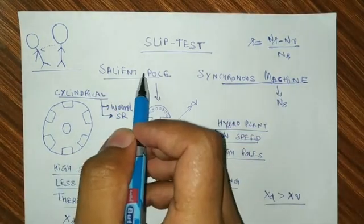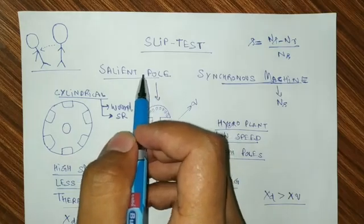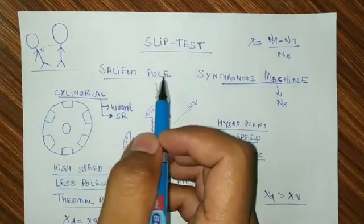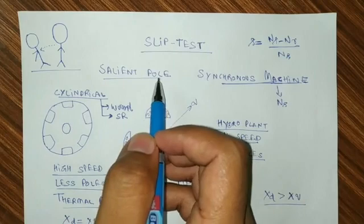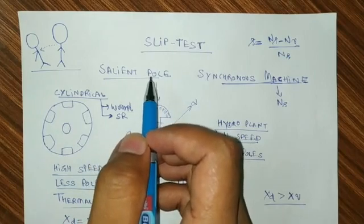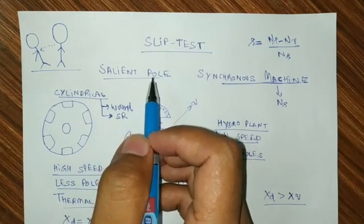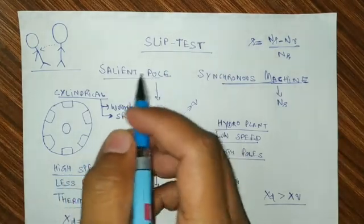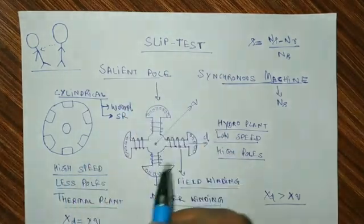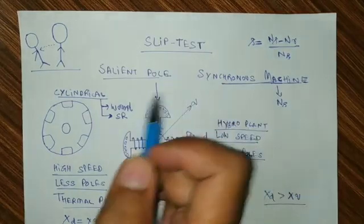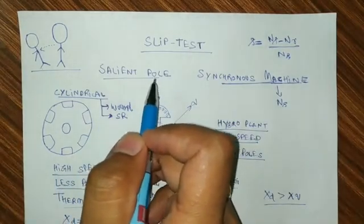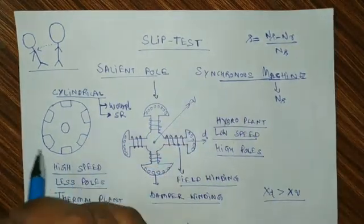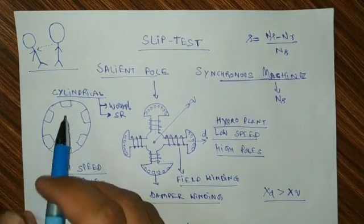So salient pole rotor — what type of rotor is it? It is basically a salient pole rotor. The design of the rotor is salient. Saliency is nothing but like our fan — it is non-uniform. So this type of rotor we are going to use for the slip test. The rotor construction you have seen in many books.